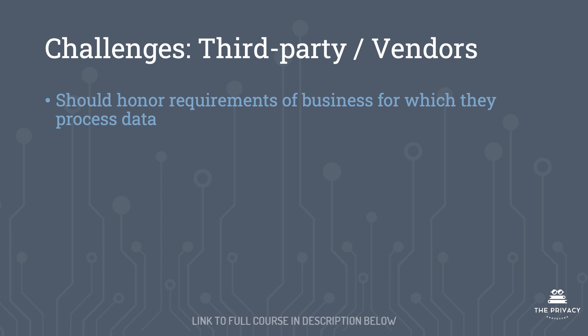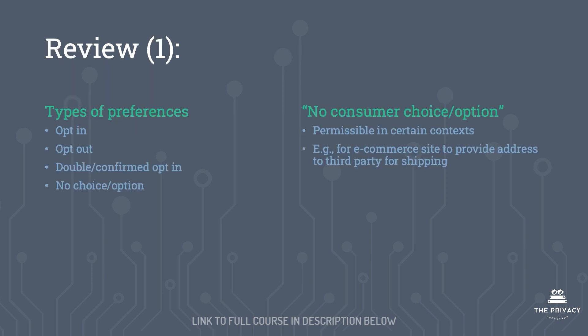We also need to consider third parties and vendors. These companies — contractors, subcontractors, whoever you work with — should honor the requirements of the primary business for which they process data. For example, if you have a fulfillment center that ships your products and a customer opts out of receiving marketing notifications, you need to make sure that the third party knows of this and does not send those materials.